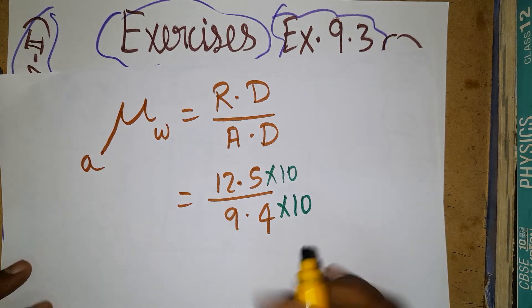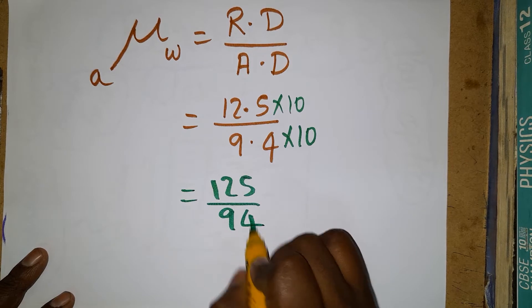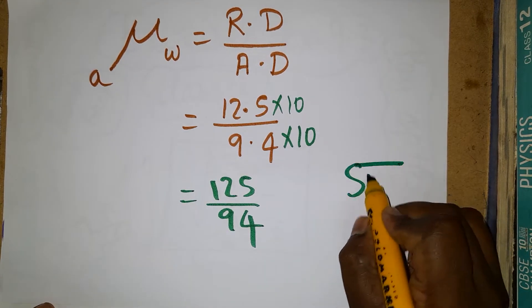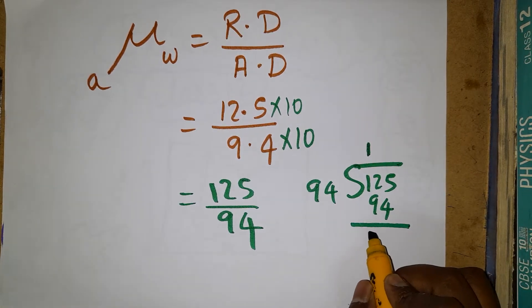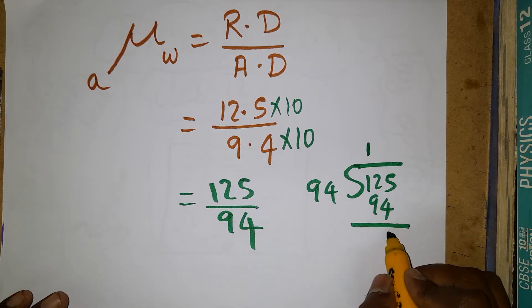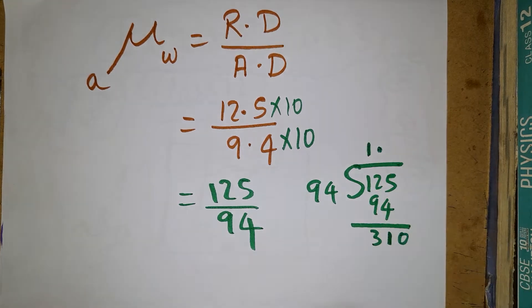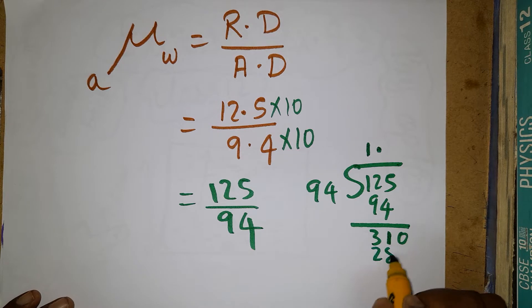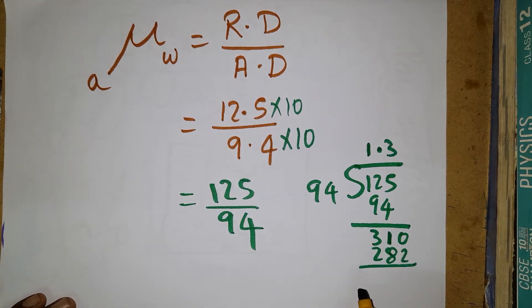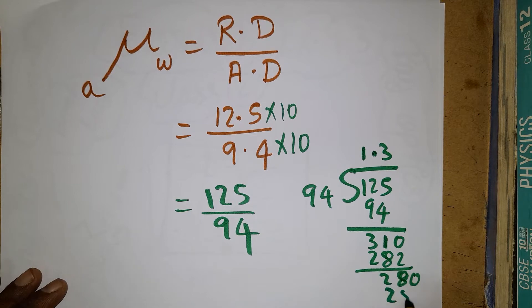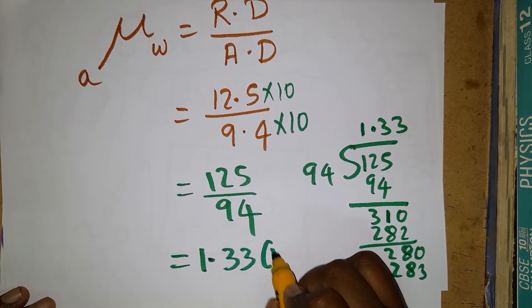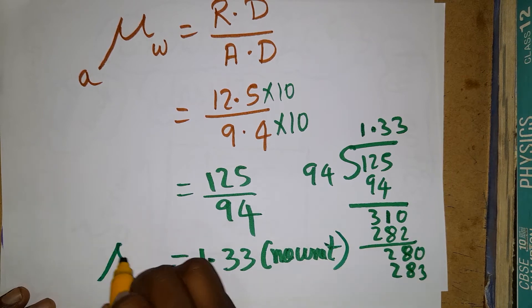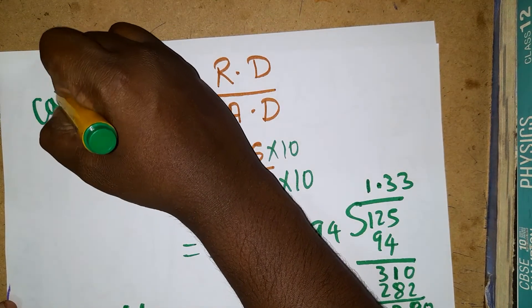To divide 12.5 by 9.4, multiply numerator and denominator by 10 to get 125 divided by 94. Performing the division: 94 goes into 125 once, remainder 31. Bringing down zeros and continuing the division gives approximately 1.33. So the refractive index of water is 1.33 — no units.